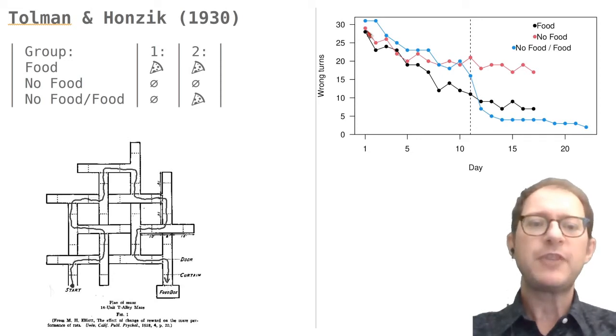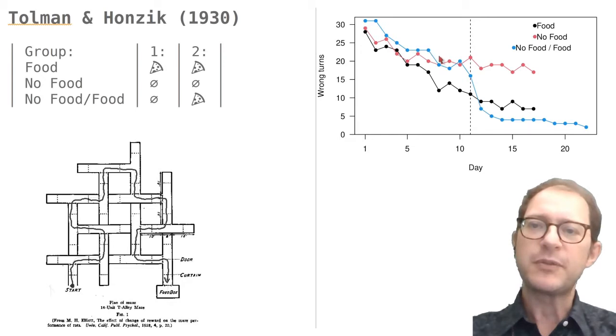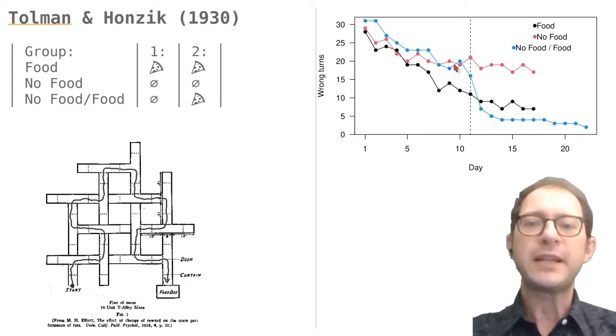To support his argument, Jensen noted that all groups initially improved in the maze, as you can see during the first few days, even the rats that were not finding food in the maze. Because an error is the same as finding a dead end, we can see that the rats are in fact learning to avoid dead ends.